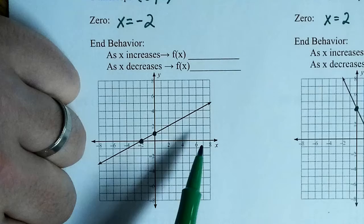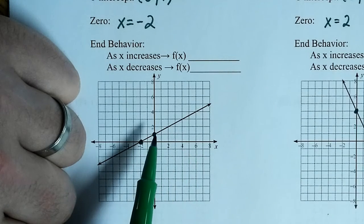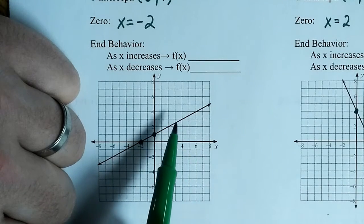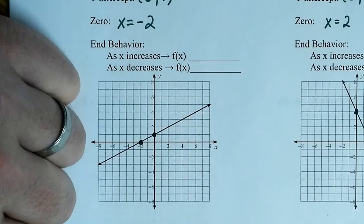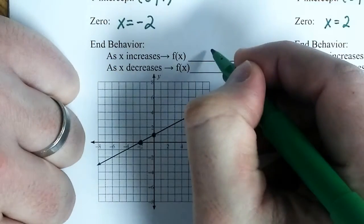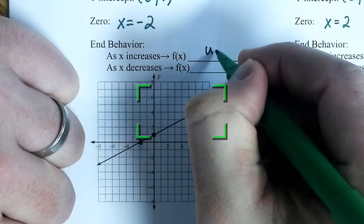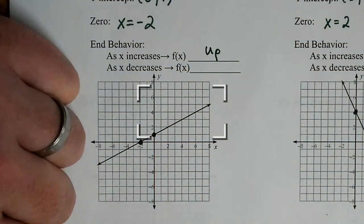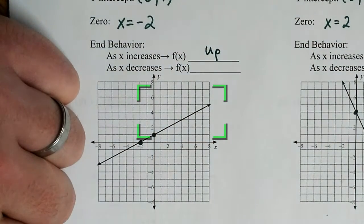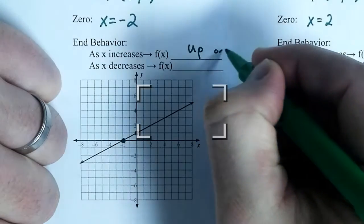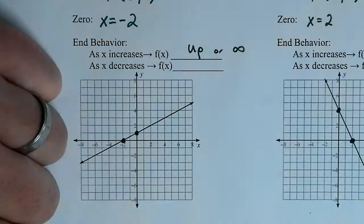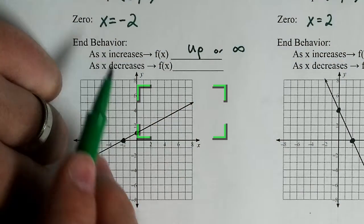So, let me ask you this. On the right side, is my graph going up or down? It's going up. So, how do we put up? Yeah, we can put down up. I'm going to show you... or positive infinity. Yeah, positive infinity. So, you can put up, or you can put positive infinity.